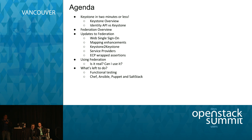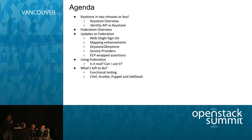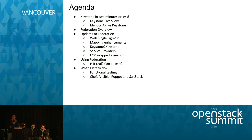Agenda: we're going to cover Keystone quickly. We'll talk about the differences between the identity API and Keystone. We'll do a Federation overview and talk about all the cool updates we've been doing to Federation. Then we'll talk about how Federation is rolling its way out into some of the distros and what vendors are supporting it. And then we'll talk about future work and what's left to do.